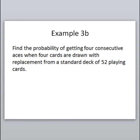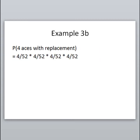Similar example but slightly different: find the probability of getting four consecutive aces when four cards are drawn with replacement. This time we draw a card, put it back, shuffle, then draw again. So on every draw we still have four aces out of 52 cards — the probability is 4/52 each time. This makes these independent events because the probability is exactly the same every draw, since we're putting the card back and not changing the odds of each subsequent draw.